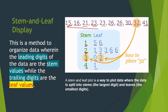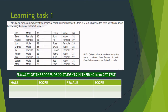Since the data is already arranged in ascending order, the leaves are also arranged in ascending order. For learning test number 1, you're going to make a summary of the scores of 20 students in a 40-item AP-7 test. Organize the data by making a table. In the given table, the male and female students are mixed, so collect all male students with their corresponding scores and all female students with their scores. Take note: rewrite the names in alphabetical order.